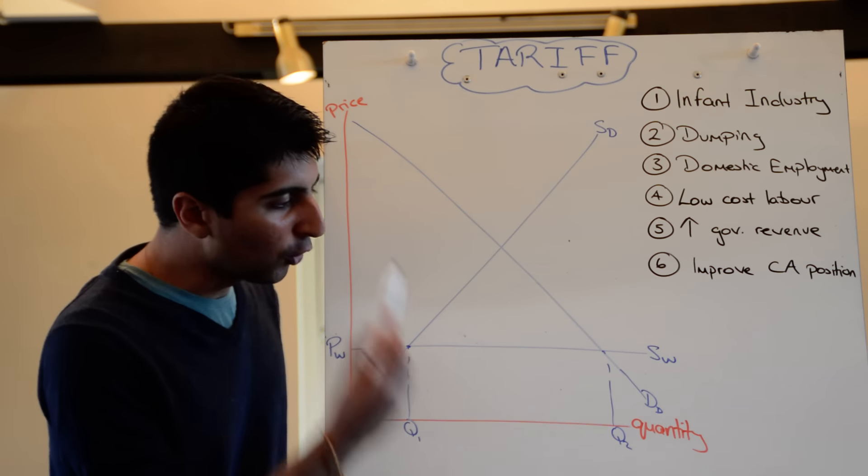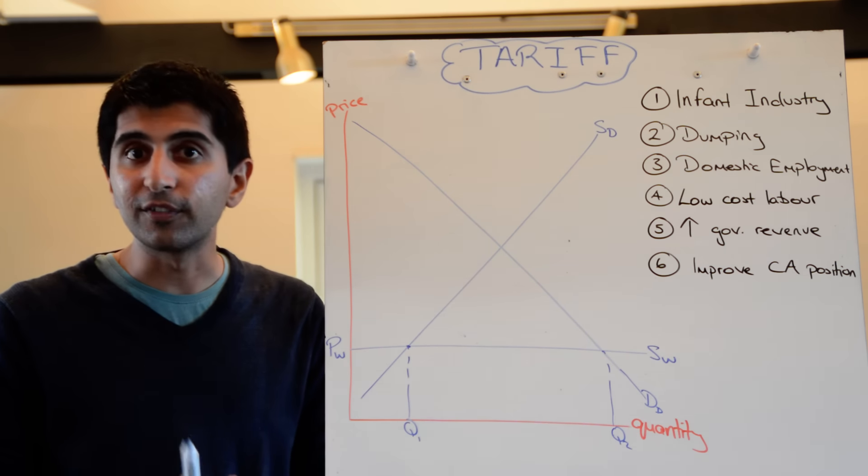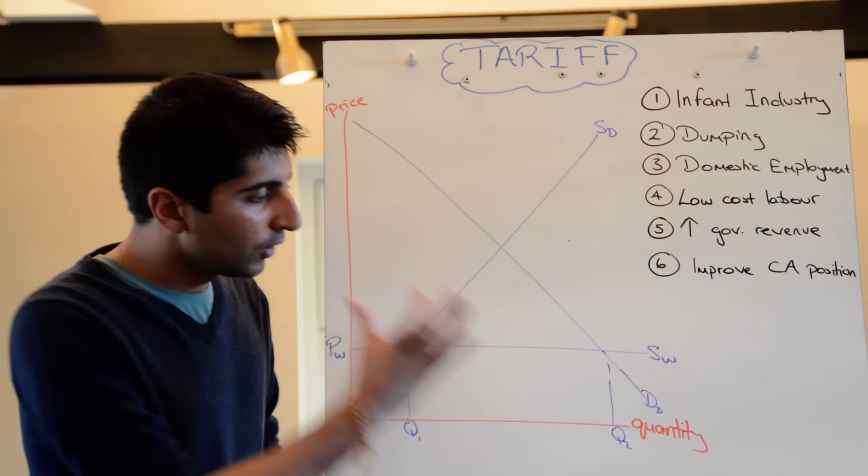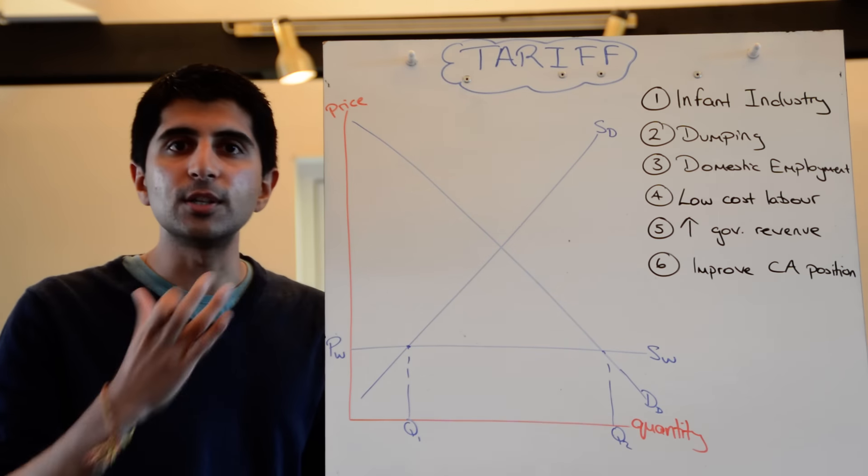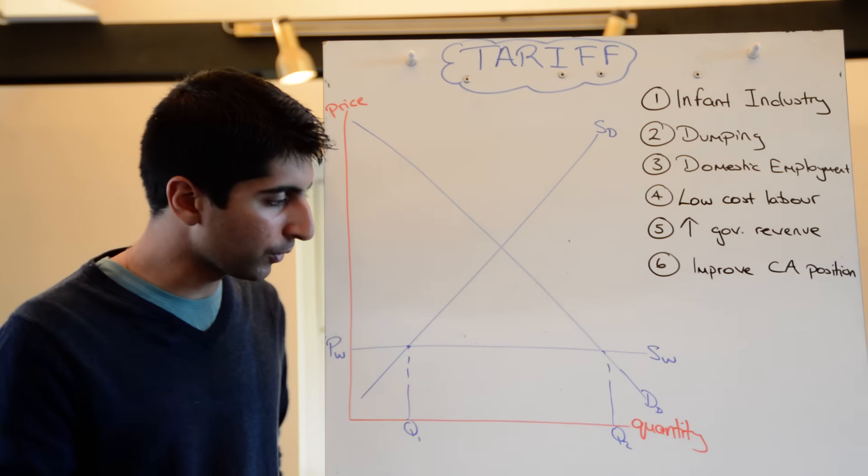So normally to ration the excess demand, the price would rise. But because the world supplies have got the price of PW, there is no chance of that price rising. So the rest is going to be imported. So the difference between Q1 and Q2 would be imports.